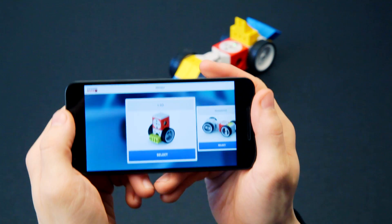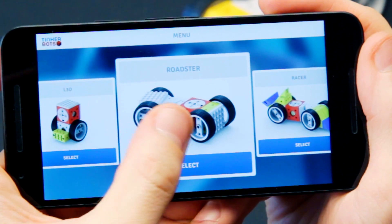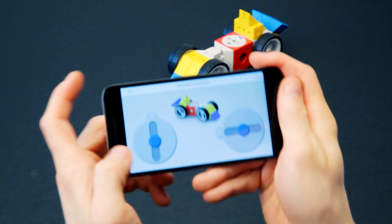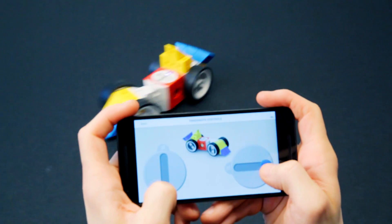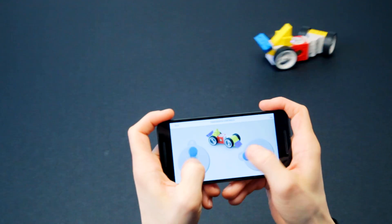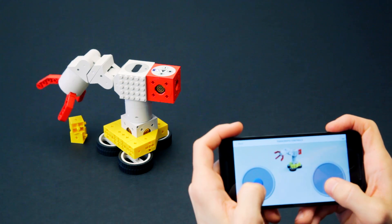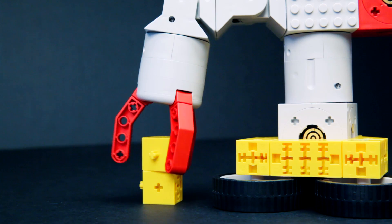You can use the TinkerBots app as a remote control with all your robots. Just select the robot you have built and then connect it to your tablet or smartphone. Now you can easily speed up your robot, steer it, or even grab things and place them somewhere else.